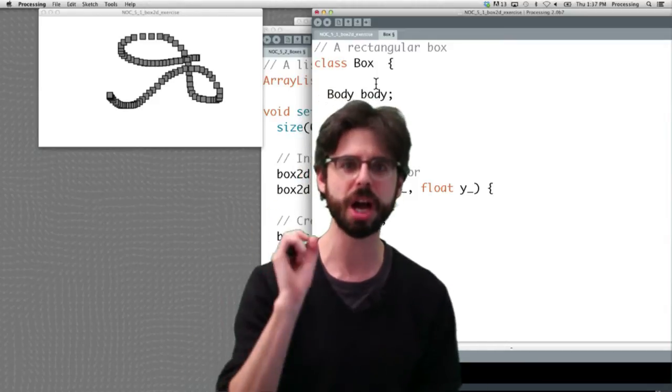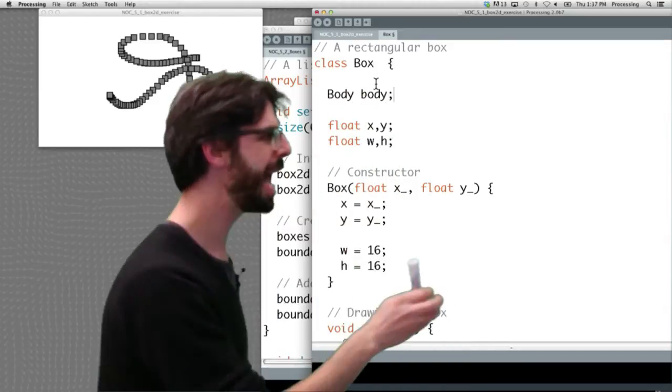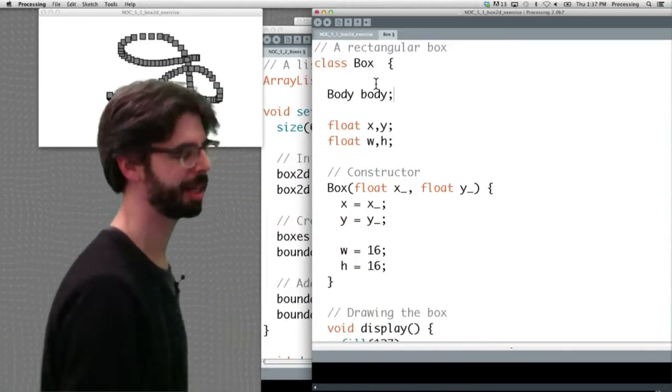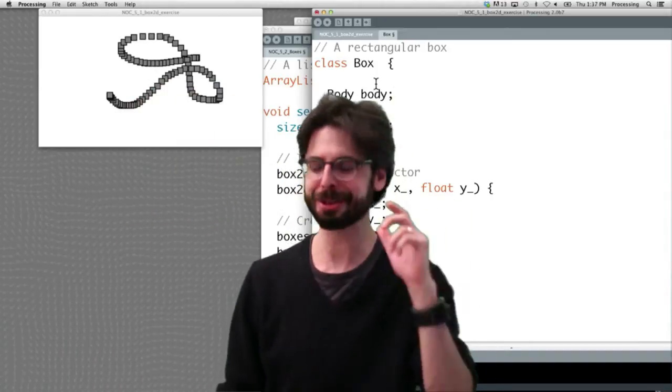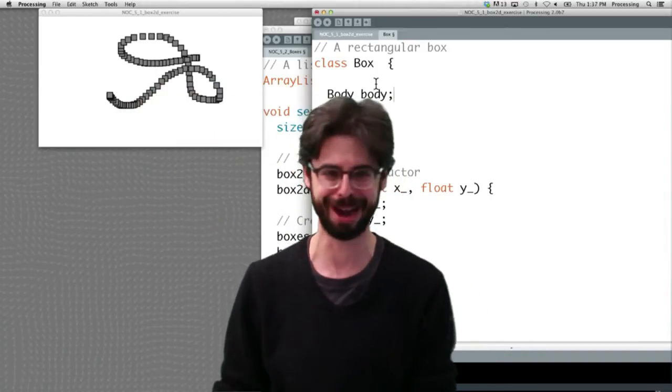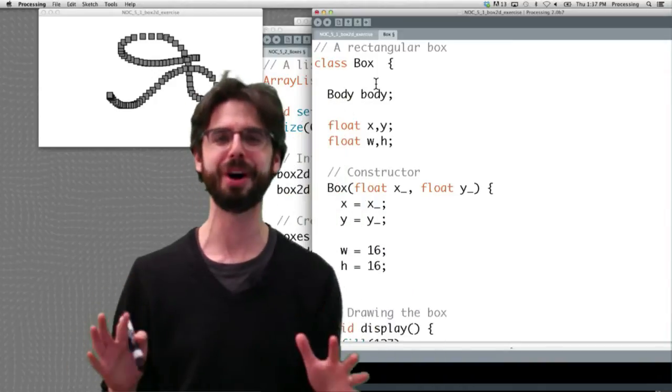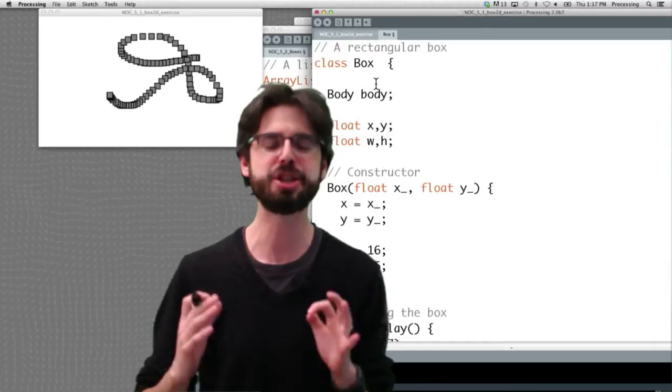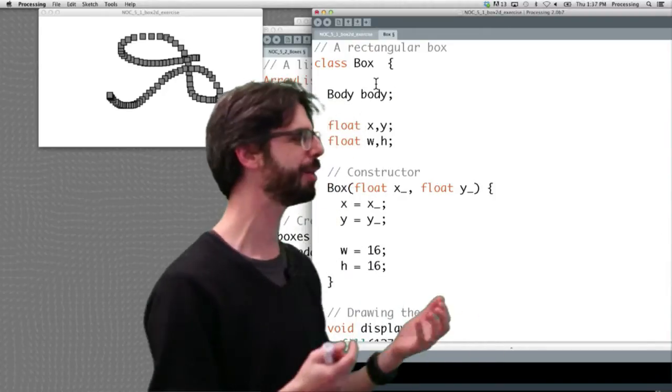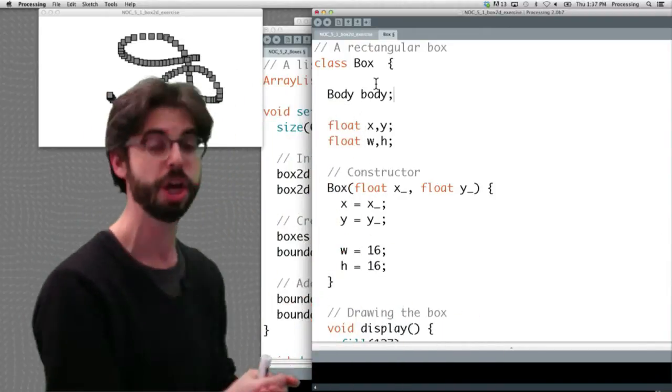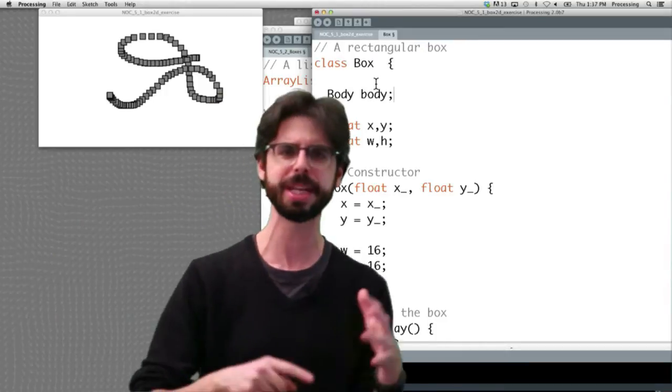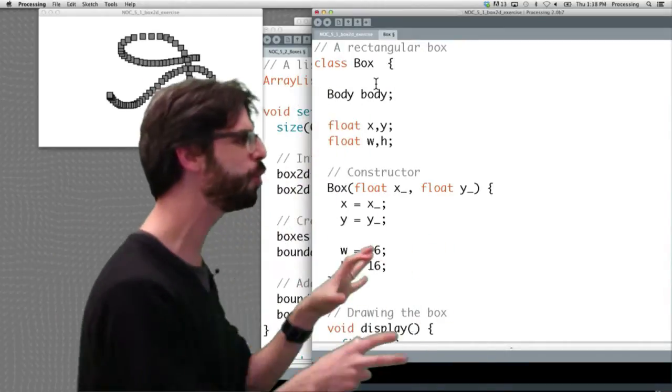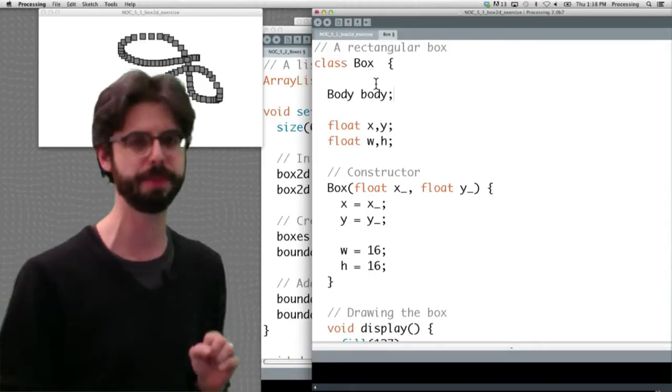So the question becomes, first and foremost, how do we make this body object? And unfortunately, the answer to this question is somewhat of a nightmare. And there's a lot of steps involved, and the code is a lot of syntax, a lot of methods, and things to remember. And I don't know that there's any way that you would be able to complete this exercise. You could try to look up the reference of the documentation.